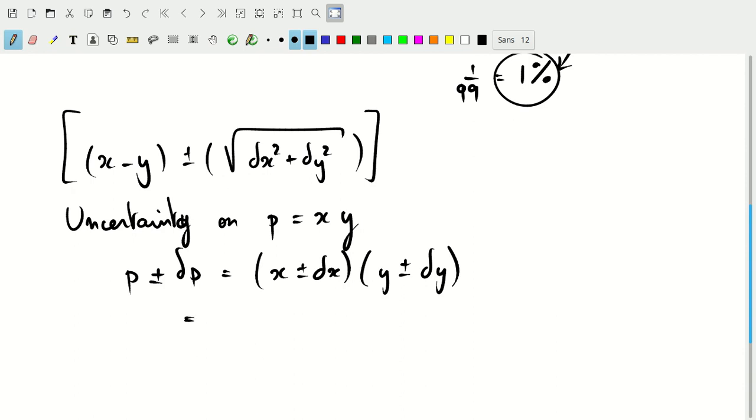We can write this now in terms of relative uncertainties. We can pull out the x and the y to the front. We get x times one plus or minus dx over x—and we'll just assume for the sake of argument that x is greater than zero and y is greater than zero—and then we get y times one plus or minus delta y over y.